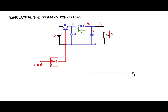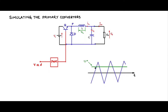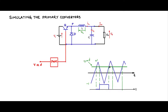Inside this PWM block what you may find is that there is a triangular carrier at 10 kilohertz — I will set it to 10 kilohertz for now but you can experiment with different frequencies. This carrier is swinging from minus 1 to plus 1, and then you can have a control voltage proportional to duty cycle. After comparison of these two voltage signals, the output that you will get will be a PWM signal. At this comparison point, the control voltage proportional to duty cycle is higher.